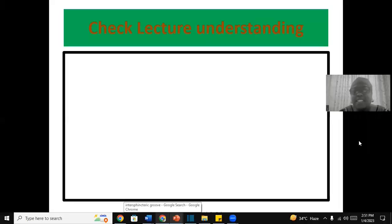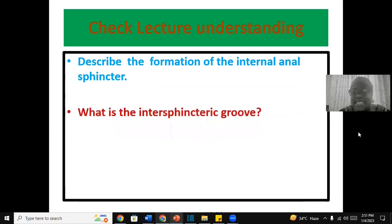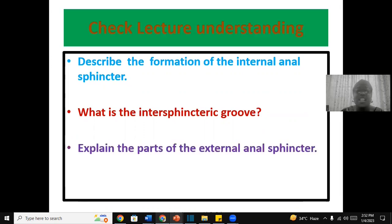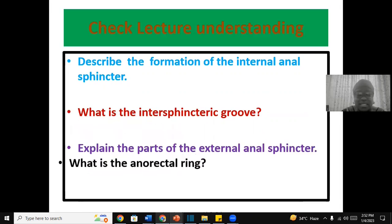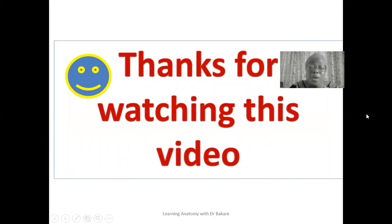Let's check our understanding through the following questions: First, describe the formation of the internal anal sphincter. Second, what is the intersphincteric groove? Third, explain the parts or sub-regions of the external anal sphincter. And the last question: what is the anorectal ring? These we have adequately described during this lecture. Thanks for watching — please stay glued to this channel.